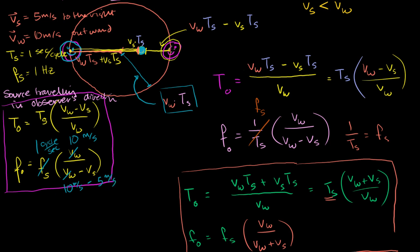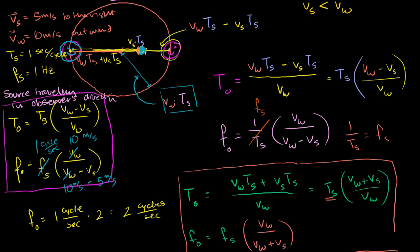Using those numbers, the observed frequency for the observer in the path of the source is 1 cycle per second times 10 over (10 minus 5). The meters per second cancel out, giving 10 divided by 5, which equals 2 cycles per second. The observed period is the inverse: one half seconds per cycle. This is exactly what we got in the previous video.